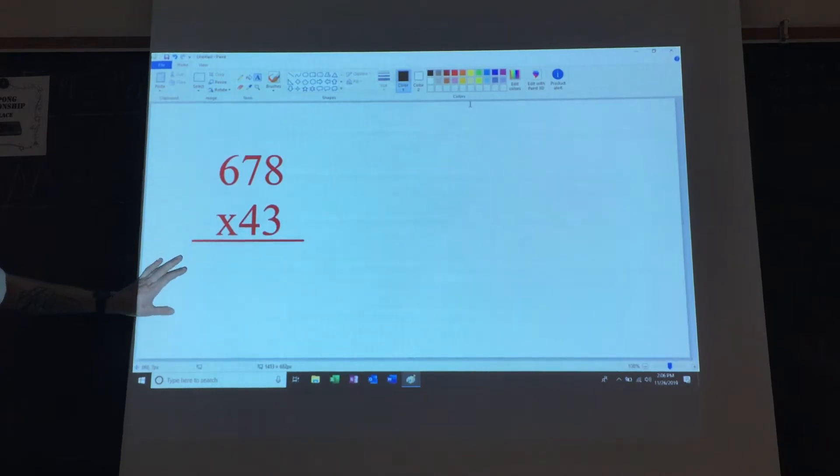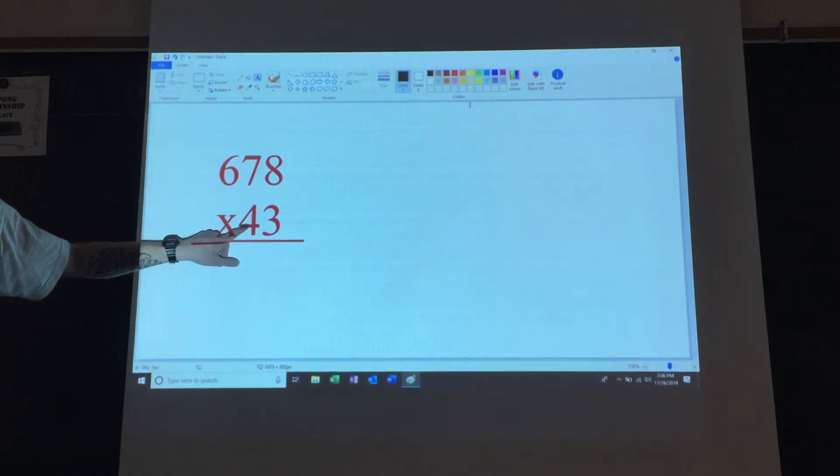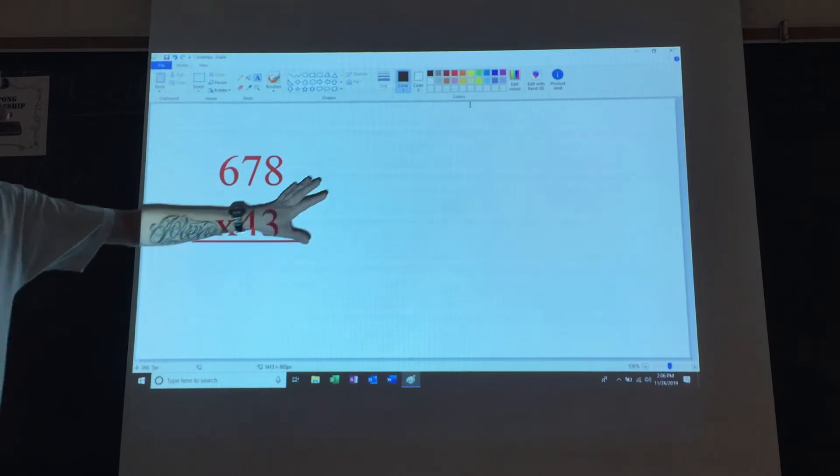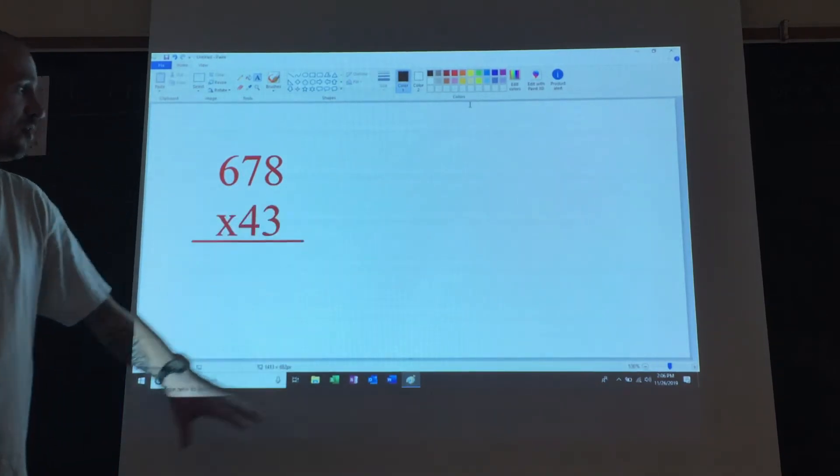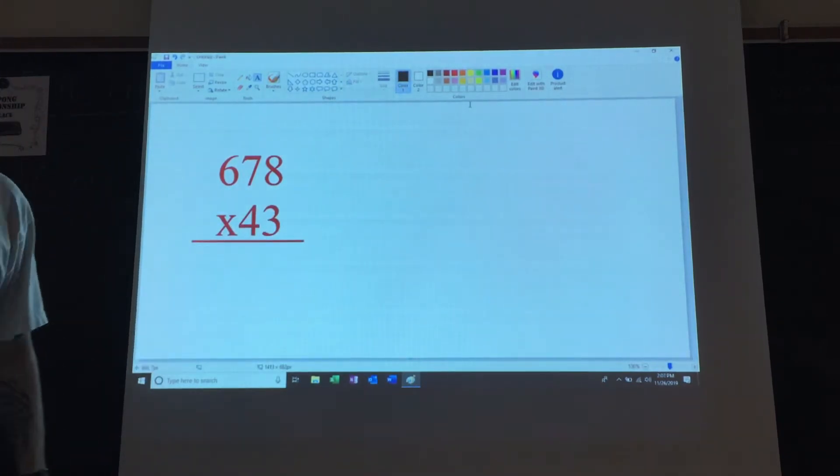The second step is to multiply the 4 times the 8, 4 times 7, 4 times 6. I like to do that off to the side so you don't get confused with all the numbers. We're going to go through the steps right now.